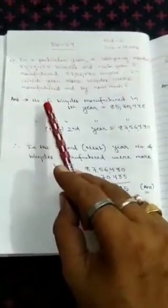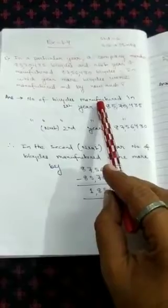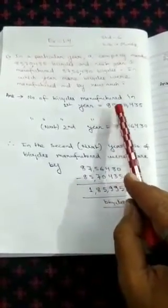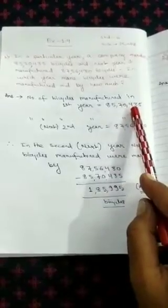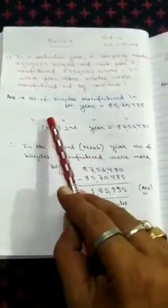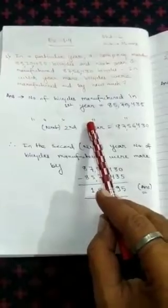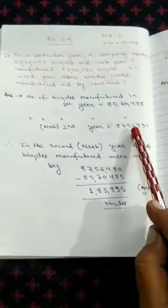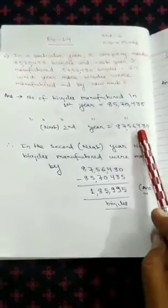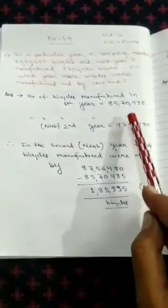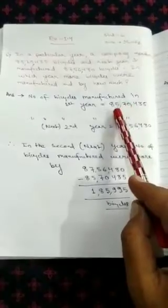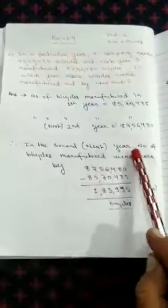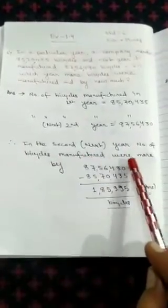Now answer. Number of bicycles manufactured in first year equals to 85,70,435. Number of bicycles manufactured in the next or second year is equal to 87,56,430. Now from here you can easily see that first year it was 85,00,000, second year it was 87,00,000. So in the second year or the next year, number of bicycles manufactured were more.